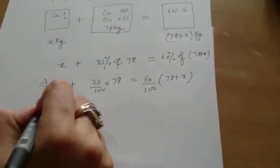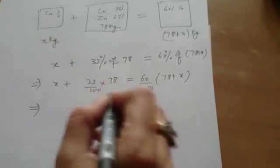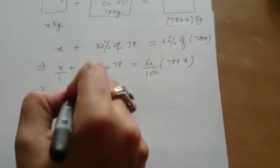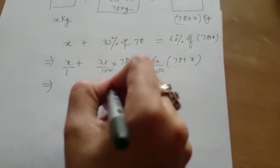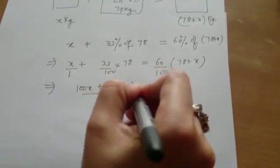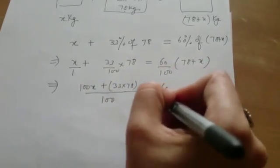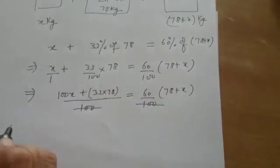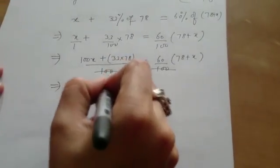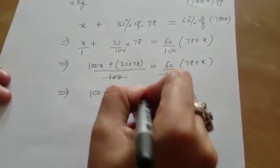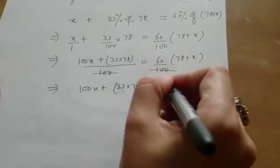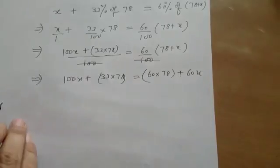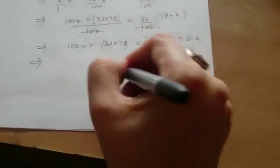Yes. This implies, you can take 100 as common denominator here. So this will be 100X plus 33 into 78. This is equal to 60 upon 100, 78 plus X. These two get cancelled. So this implies 100X plus 33 into 78 is equal to 60 into 78 plus 60X. This implies, bring 60X to this side.